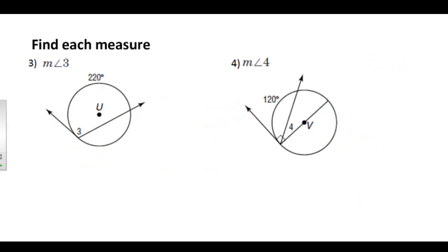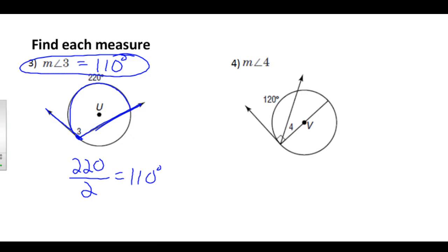Let's try a few examples for that theorem. Problem number three: find the measure of angle three. Angle three has its vertex on the circle itself, so just like an inscribed angle, it's half the measure of its arc. Half of 220 degrees is 110 degrees. Problem number four: find the measure of angle four. This arc is 120 degrees, so its angle — with vertex on the circle — is half of that: 60 degrees. Since the larger angle is 90 degrees, the measure of angle four is the remainder: 30 degrees.